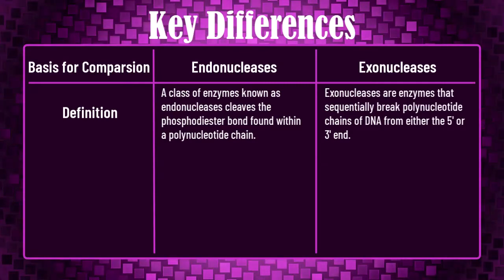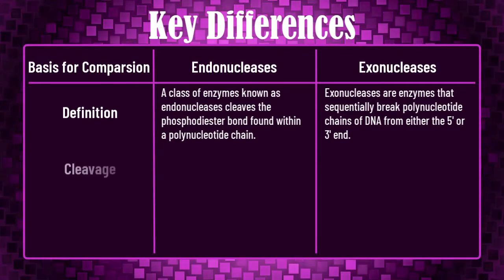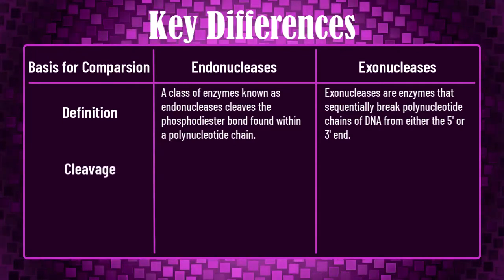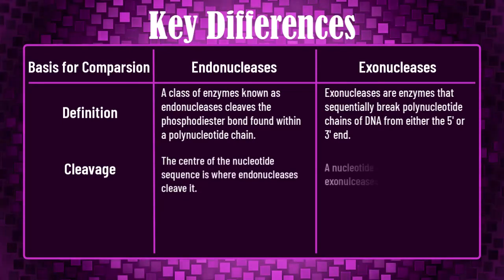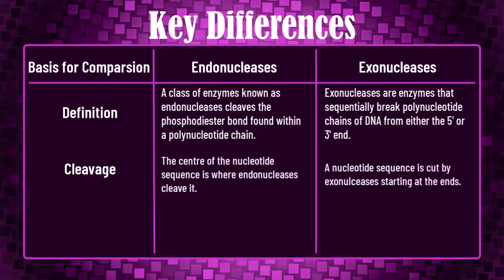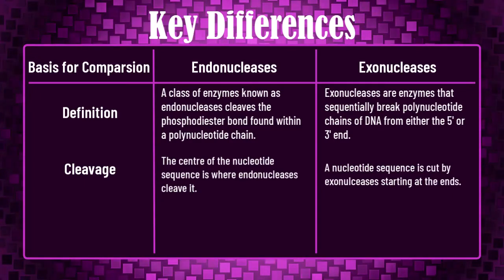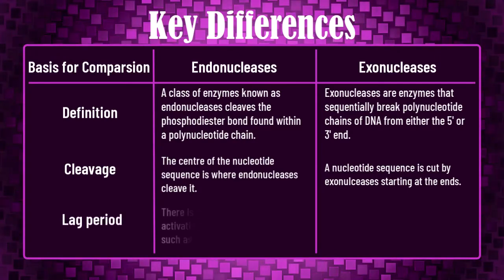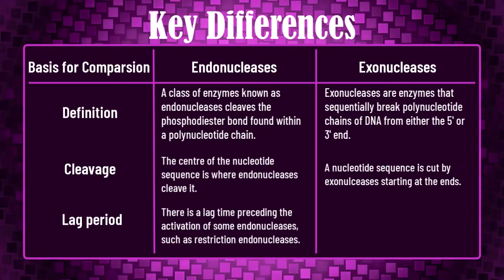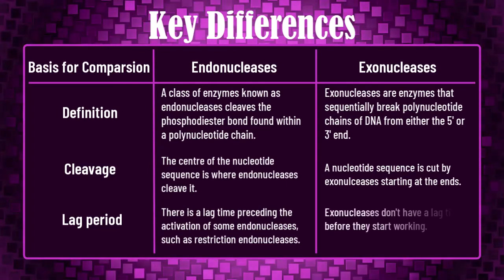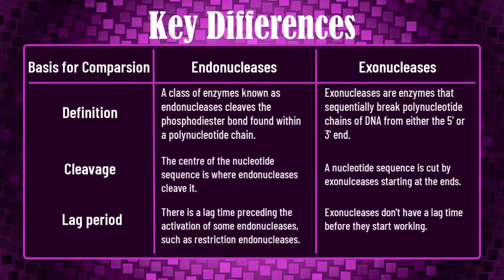Regarding cleavage: in endonucleases, the center of the nucleotide sequence is where cleavage occurs; whereas in exonucleases, nucleotide sequences are cut starting at the end. Regarding the lag period: in endonucleases there is a lag time preceding the activation of some endonucleases, such as restriction endonucleases; whereas exonucleases do not have a lag time before they start working.